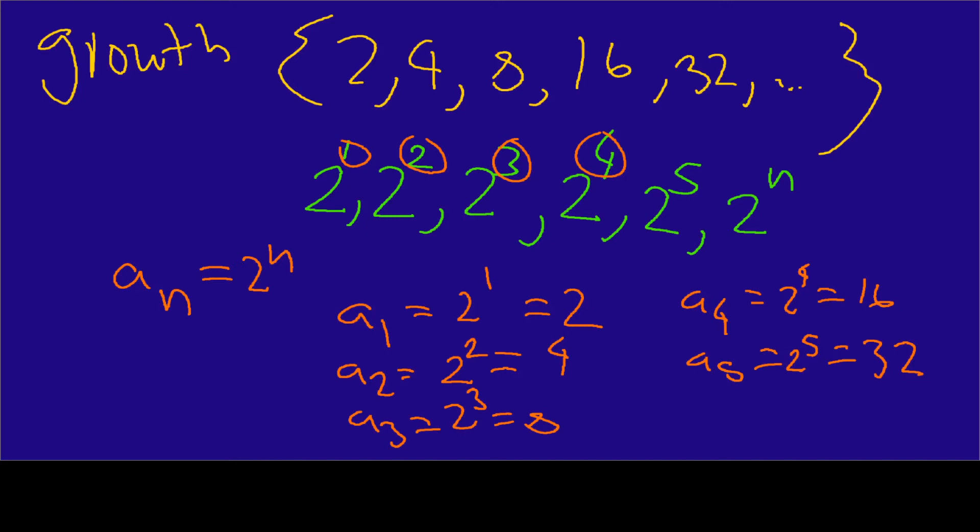This is our explicit formula. It's called explicit because it's a closed formula — it doesn't repeat and it doesn't take prior values to determine the future value.